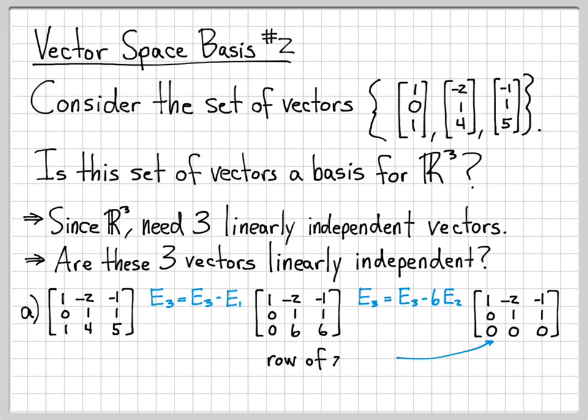So at this point right here, I have a row of all zeros. So that's very different than the first time. I'm missing a pivot. I don't have a pivot anywhere in this third row. I only have pivots in the first two columns. There's no pivot in the third column. So that means these are not all linearly independent. I only have two that are independent from this set.